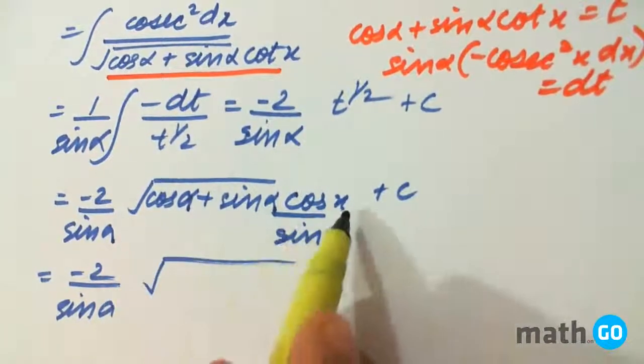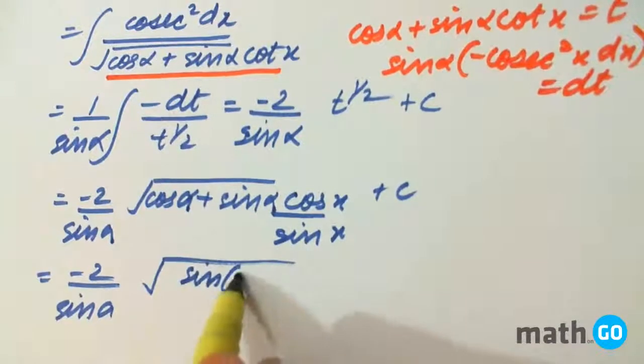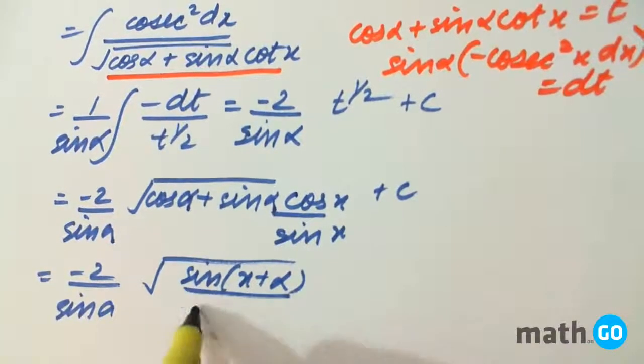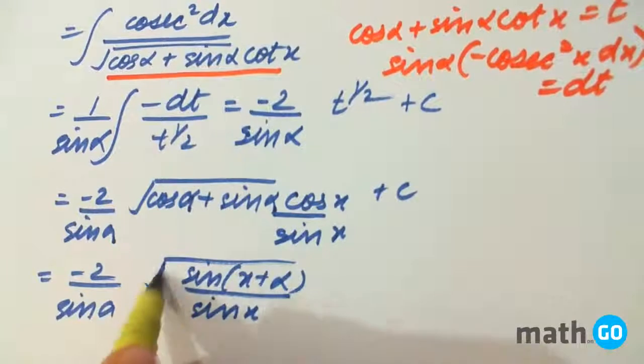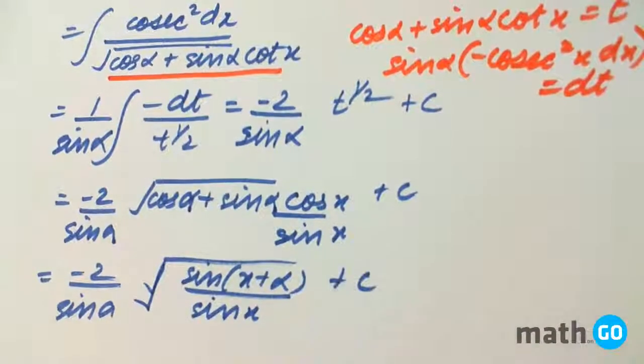Sin x cos alpha plus sin alpha cos x becomes sin of x plus alpha with denominator being sin x plus c.